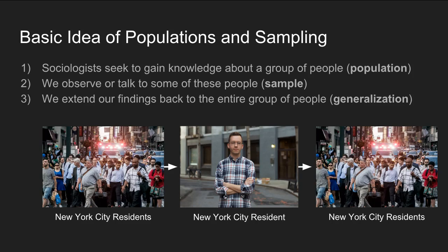Once you've identified a population, you may go out and observe or talk to some of these people. The people that you talk to represent the sample — the cases that you selected for your analysis. Based on your observations and interviews, you might make a set of generalizations which you extend back to the entire group of people, back to that population.